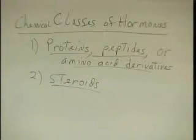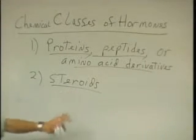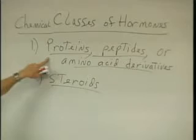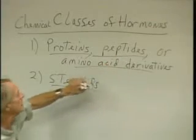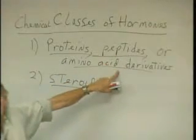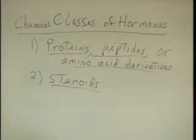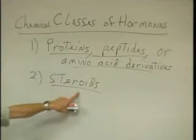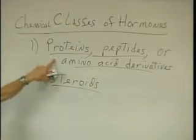The key point is that steroids are lipids, and lipids can cross cell membranes. So steroid hormones can cross cell membranes and get inside cells. Proteins are way too big to get inside cells. Peptides usually are too big to cross cell membranes easily. So where are the receptors going to be? If it's a steroid, the receptor is going to be inside the cell. If it's a protein hormone, the receptor is going to be on the cell membrane.